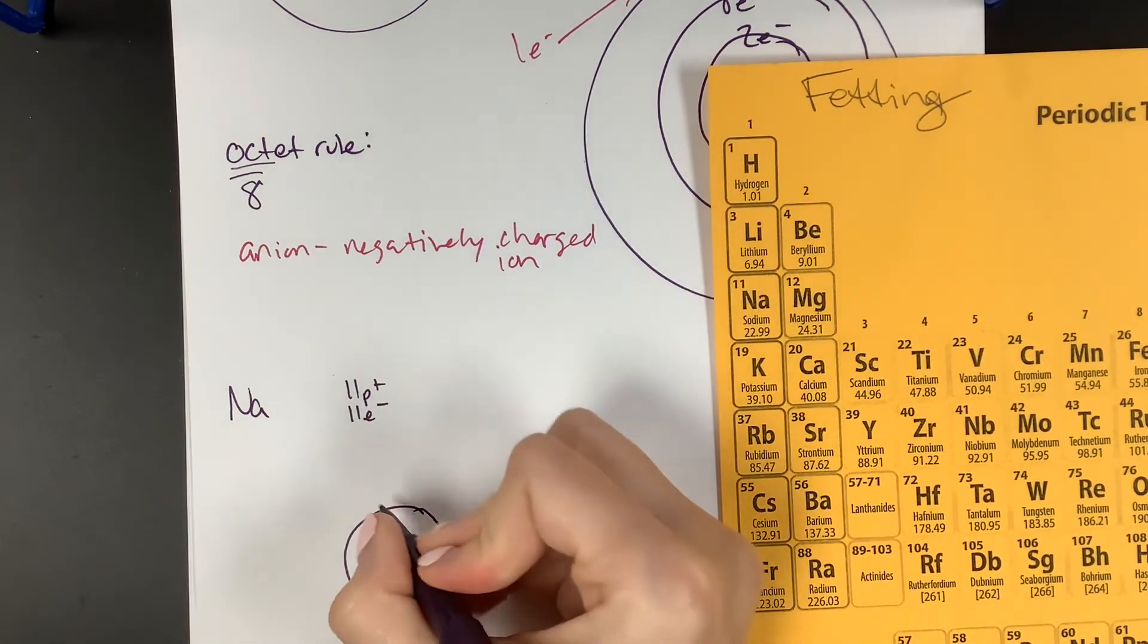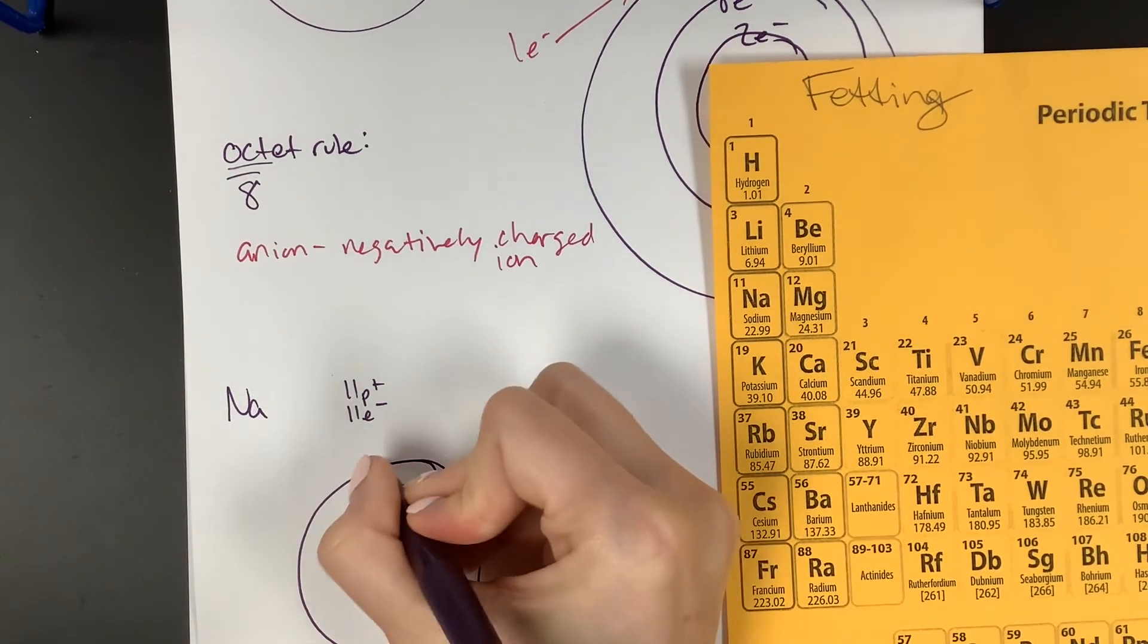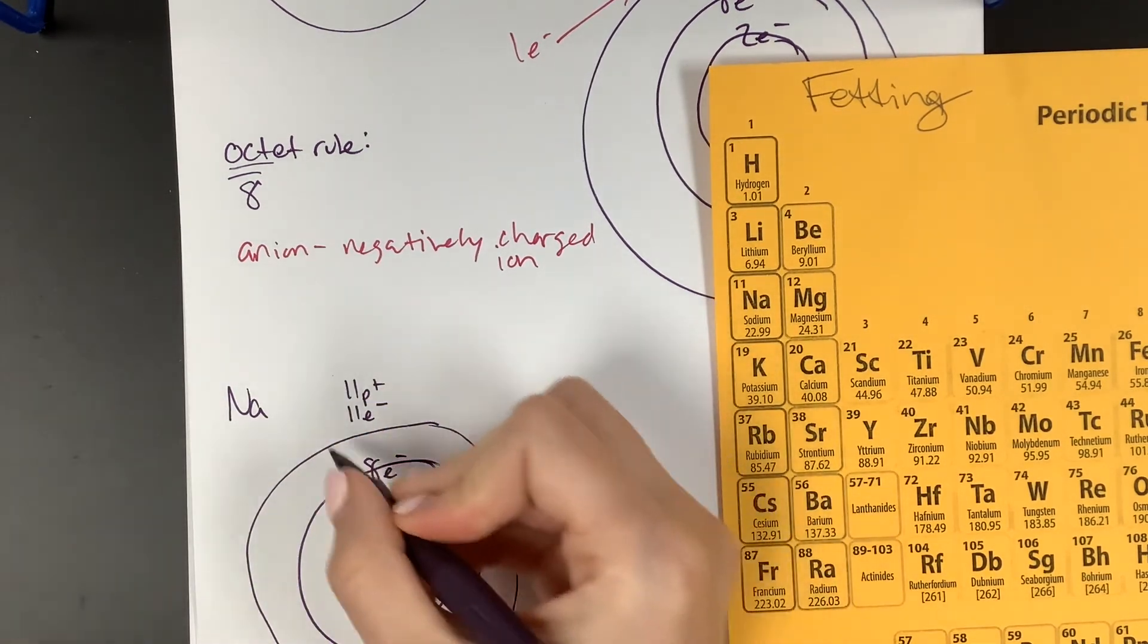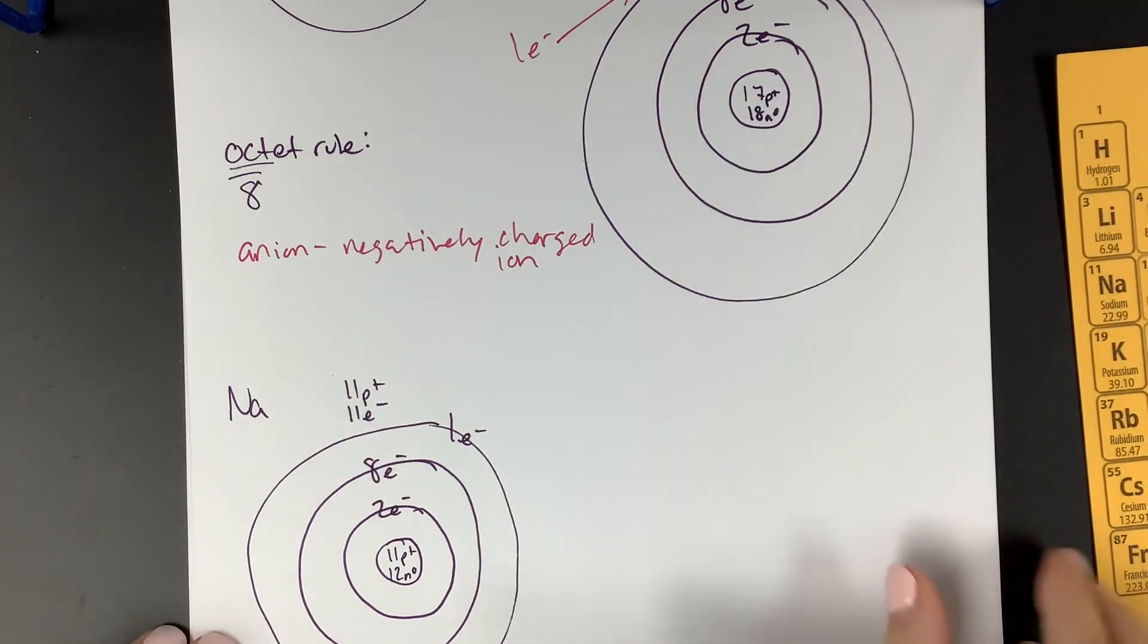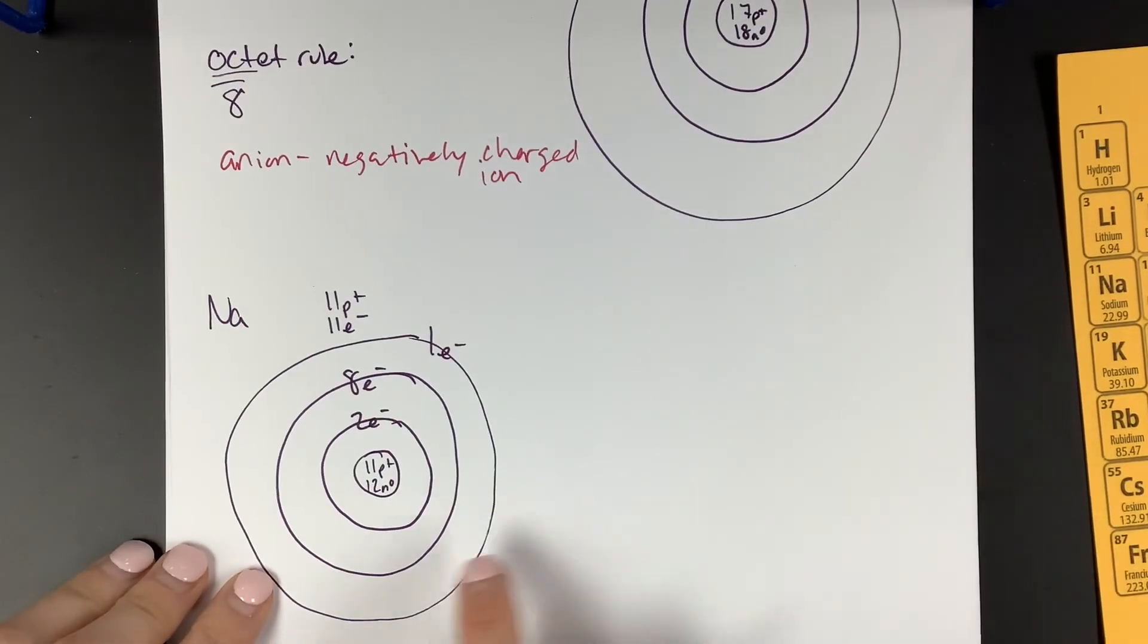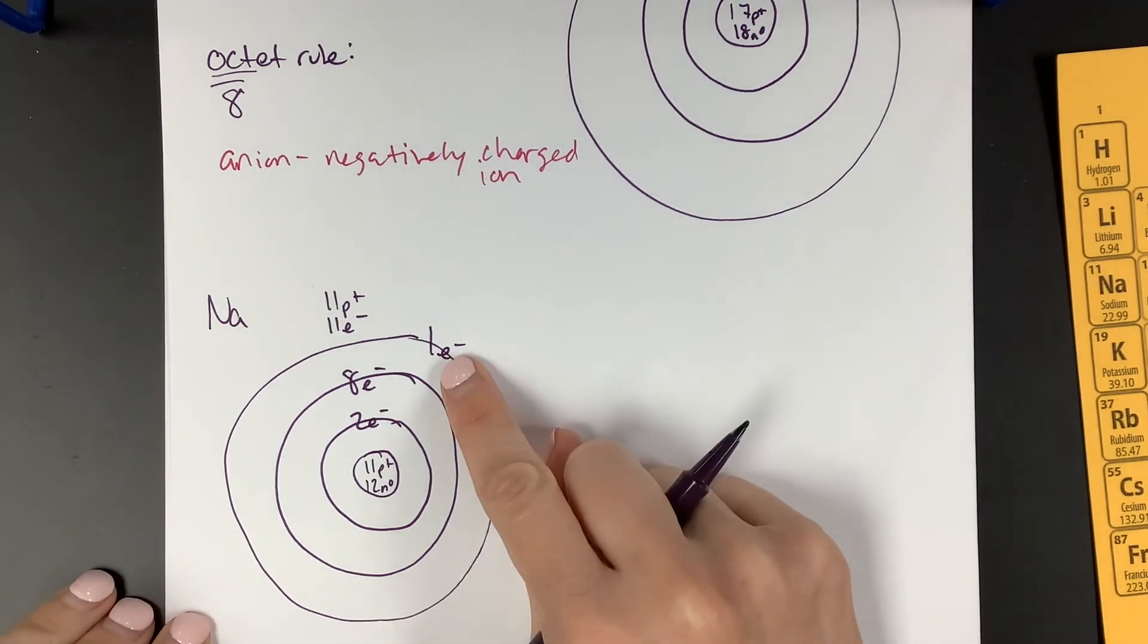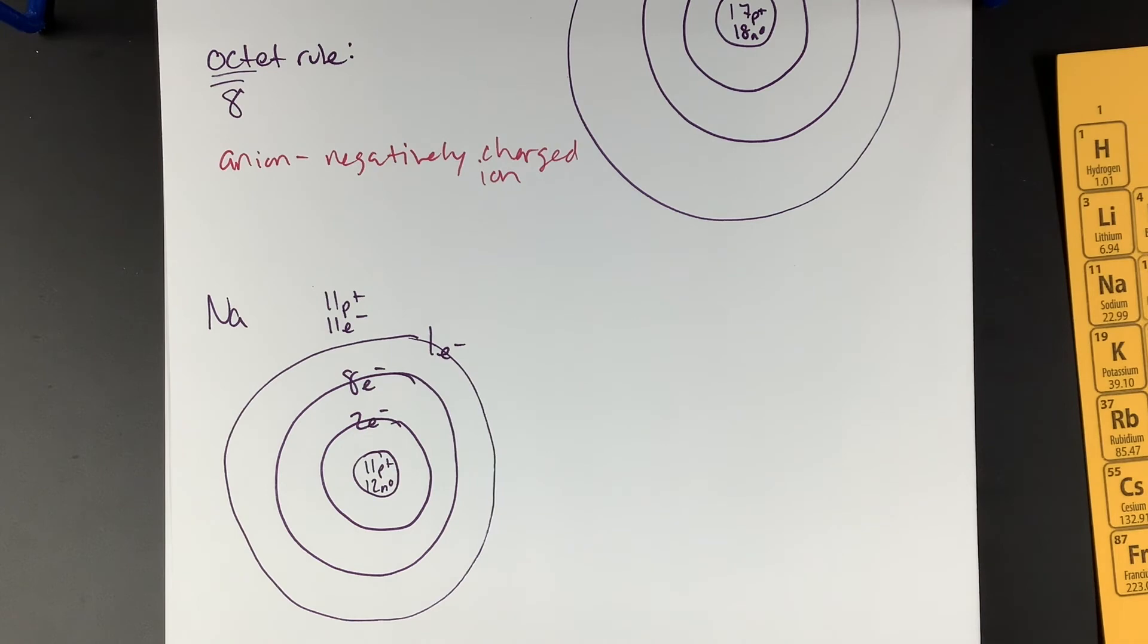So two go in the first shell. Eight go in the next shell. We've got two plus eight is 10. We've got one more to place. So one goes in that last shell. Now, in order for this to have a full octet, it could gain seven electrons, which is a lot. Or it could lose one electron. Which one sounds easier to do? Lose one electron. Because if we lose that one electron, then we lose this whole outer shell.